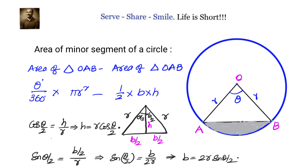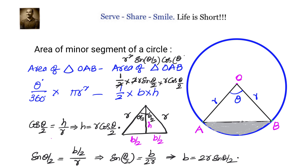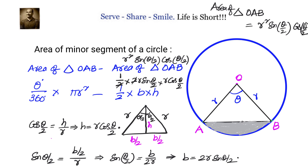Now we have base and height. Substituting: half into 2r·sin(θ/2) into r·cos(θ/2). The 2 and 2 cancel, so the area of triangle OAB = r²·sin(θ/2)·cos(θ/2).